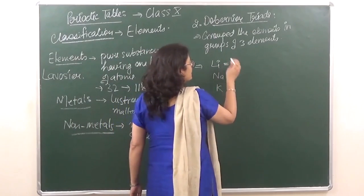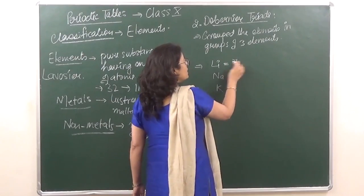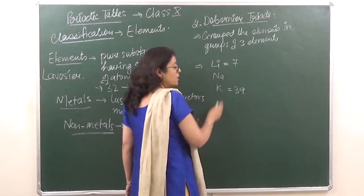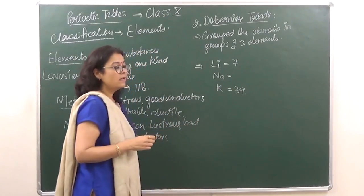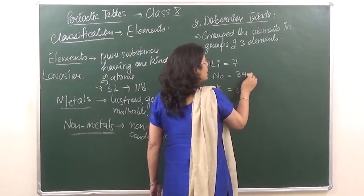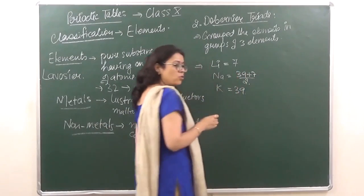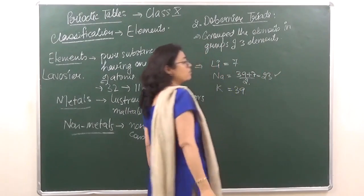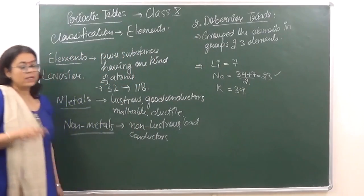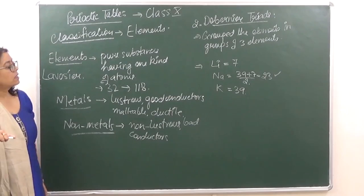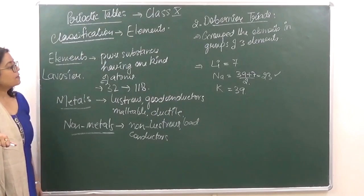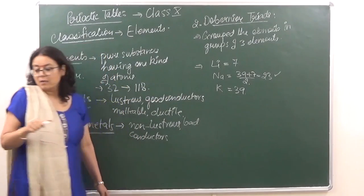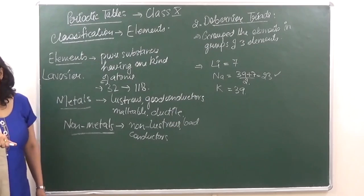For example, the atomic mass of lithium is 7 and the atomic mass of potassium is 39. According to Dobereiner, the expected atomic mass of sodium should be (39 + 7) / 2 = 23, which was absolutely correct. The atomic mass of sodium is 23. For your syllabus, you should know this triad: lithium, sodium, and potassium.